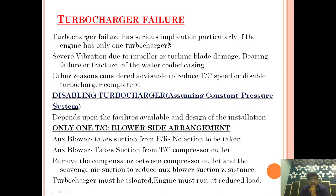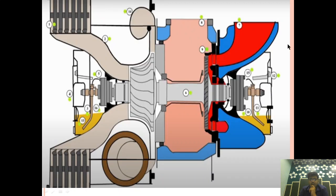Turbocharger failure has serious implications, particularly if the engine has only one turbocharger. Causes include severe vibration due to impeller or turbine blade damage, bearing failure, or fracture of the water cooling casing. So the casing can fracture, the impeller can get damaged, the turbine blade can get damaged, and the bearing can go bad. These are all the conditions which can lead to a turbocharger failure.